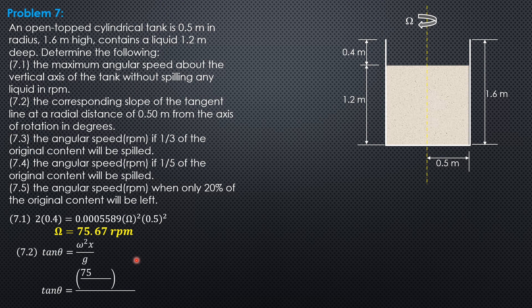So tangent theta is 75.67 times pi over 30 quantity squared times 0.5 over 9.81. So using the calculator, theta is 72.65 degrees.